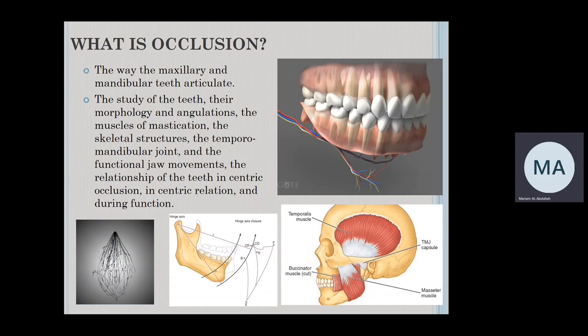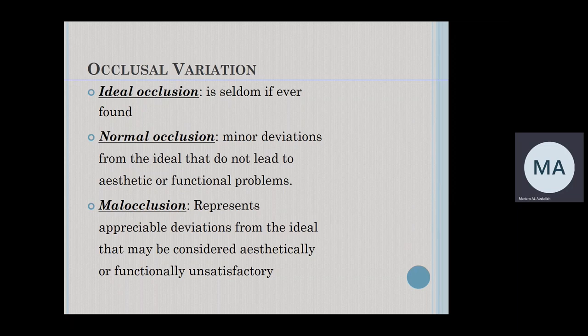Occlusion is a topic that you already covered in a whole course. It is mainly the relationship between the maxillary and the mandibular teeth in occlusion and during all types of functions — during swallowing, breathing, and mastication — and includes all the tissues and structures related to this function. About 35% of the population will have a normal occlusion, and very rarely will they have ideal occlusion. A normal occlusion is a patient with a little bit of deviation from the ideal occlusion that will not affect aesthetic or function.